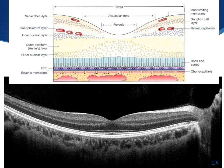When looking at a macular scan in OCT, it's important to comment on the nerve fiber layer. The nerve fiber layer is always thicker towards the optic nerve, indicating this is a right eye.